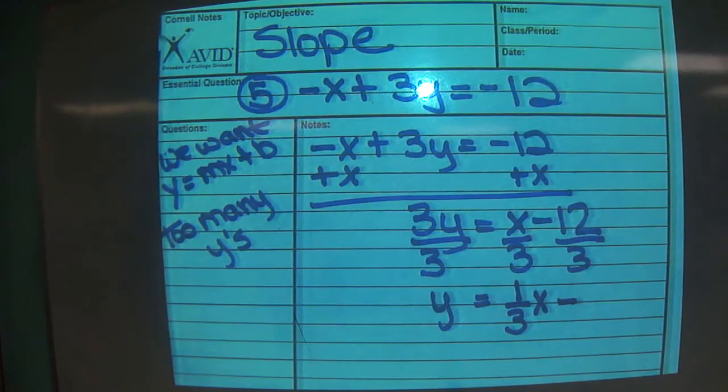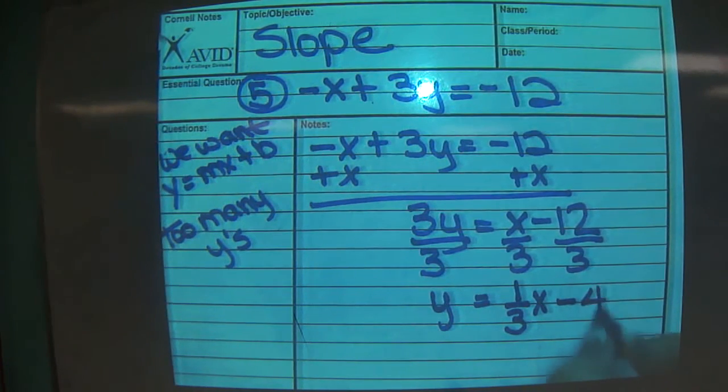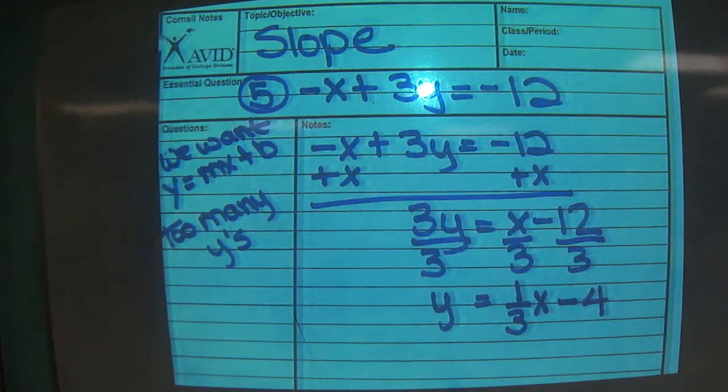So now we have 3 over 3y, which is the same as 1y. Yay! Our goal. x over 3 is the same as 1 over 3x. Isn't it? Because we know slope, it's just rise over run. Minus, how many 3s in 12? 4. Yay! We did it! That's it. We did it.